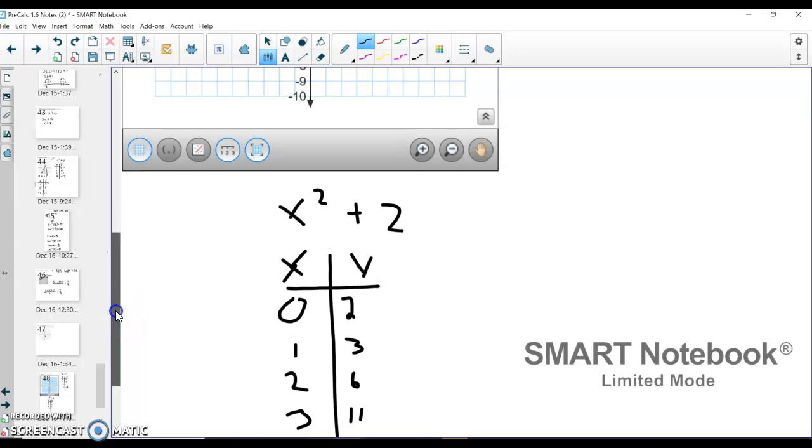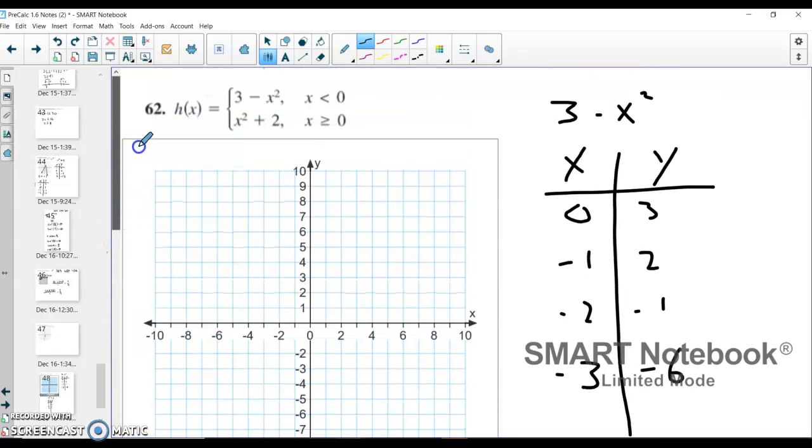And so now I can begin graphing both of them, but I do want to highlight this non-intersection point. So the first one, 0, 3, I go over 0, up 3, and this is the one where I have an open dot here, because 0 is technically not included. Now we can just graph a couple other points so we can get a good picture.